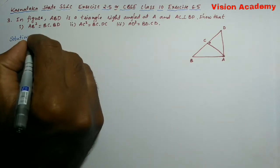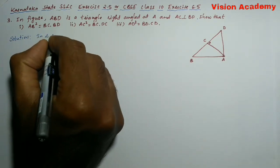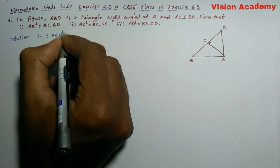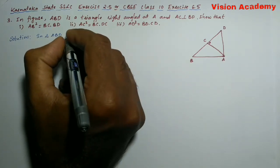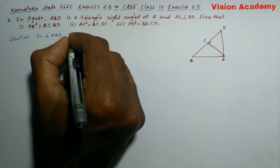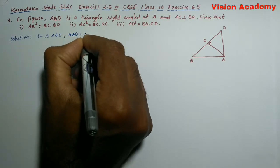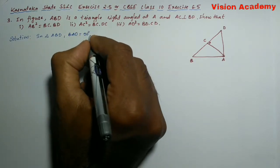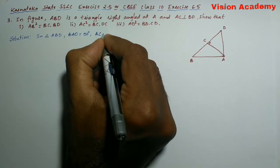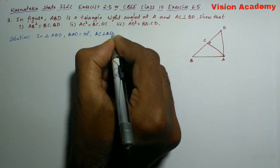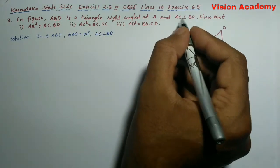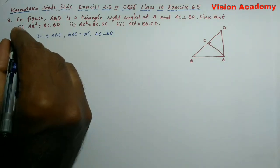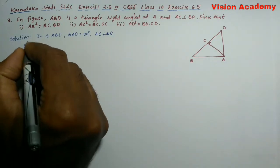Here in triangle ABD, BAD is equal to 90 degrees and here AC is perpendicular to BD, which is already given in the question. Now, let us find the solution for the first problem.